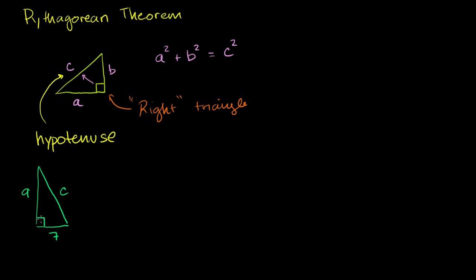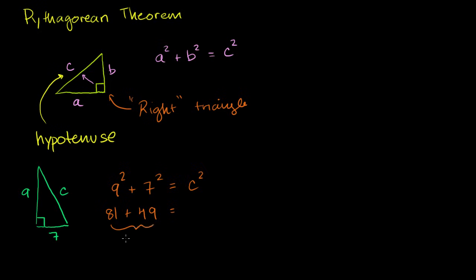c in this case is the hypotenuse — the longest side. So we know that the sum of the squares of the other sides equals c squared. By the Pythagorean Theorem, 9 squared plus 7 squared equals c squared. 9 squared is 81, plus 7 squared is 49. 80 plus 40 is 120, then we have 1 plus 9, that's another 10, so this equals 130. The left-hand side equals 130, and that equals c squared.